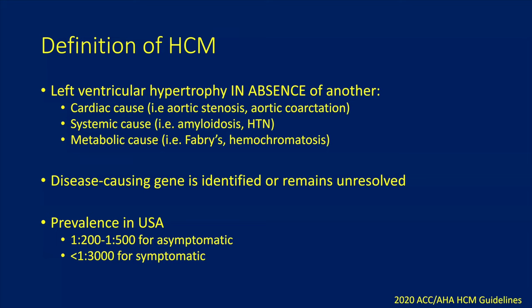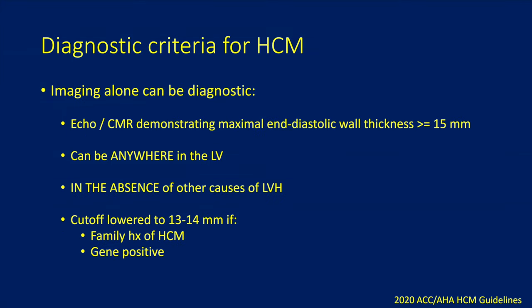So if there's LVH in the absence of all the other causes, and if a disease-causing gene is identified, then the patient may meet the diagnosis of HCM. The prevalence in the USA is actually quite common — about one in 200 to one in 500 for asymptomatic and one in 3,000 for symptomatic. So that's a lot of patients with potential HCM. The diagnostic criteria: it has to be myocardial thickening in the absence of other causes. The cutoff for diagnosis of HCM is 15 millimeters or greater anywhere in the LV measured at end-diastolic phase. The cutoff can be lowered to 13 to 14 millimeters if there's a family history of HCM or if the patient tested gene-positive for one of the causal variants.